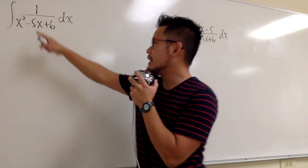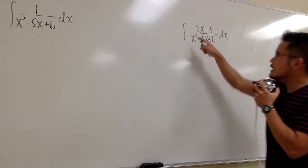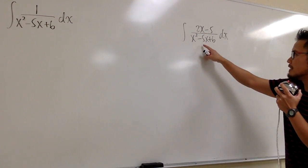We have two integrals on the board. The first one, the integral of 1 over x squared minus 5x plus 6, and the second one, the integral of 2x minus 5 over x squared minus 5x plus 6.